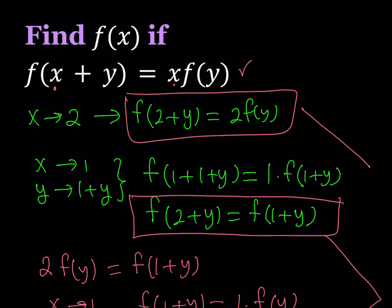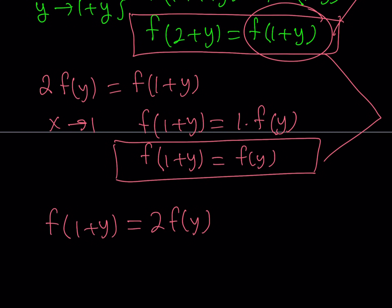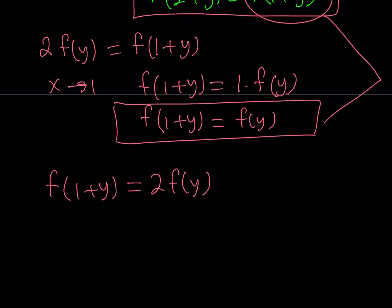So, using two of these equations, like these two, I can safely say that 2 times f of y is the same as f of 1 plus y, which is f of y. So, now, I can just set this equal to f of y because f of 1 plus y is equal to f of y as well. Okay.